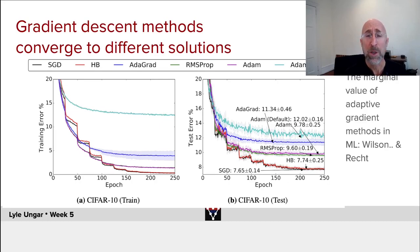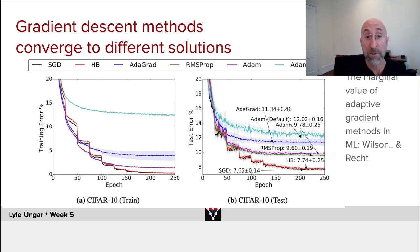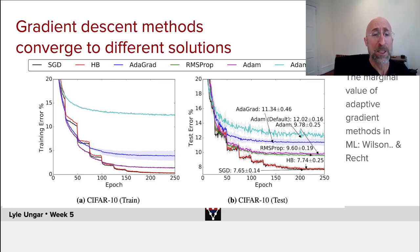Different gradient descent methods really do converge to different solutions. Shown here is a nice set of results: on the left-hand side, training error versus mini-batch epoch for a number of different methods — you can see Adam at the default up here and AdaGrad below. On the right-hand curve is the testing error, going from roughly 0.7 up to 20, so the testing error is not as low as the training error. The red method goes almost to zero training error, while its testing error goes to about 7.65 with vanilla stochastic gradient descent.